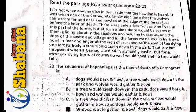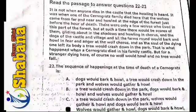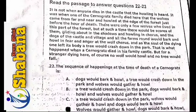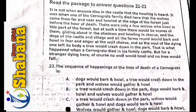'But for a stranger dying here, of course, no wolf would howl and no tree would fall.' The sequence of happenings at the time of death of a Cranograt is — the correct answer is option number D: wolves would gather and howl, dogs would bark and howl, and then the tree would crash down in the park.